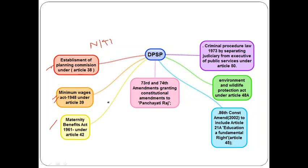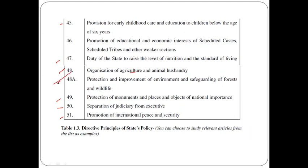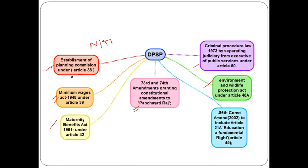Similarly, the Maternity Benefit Act 1961 was passed to bring Article 42 into practice. The Panchayati Raj constitutional amendment was made to ensure that panchayats and local governance are maintained in the country, in line with Article 40. The Environment and Wildlife Protection Act was brought to protect the environment, as mentioned in Article 48A. Then the right to education was brought into Article 21A in the fundamental rights part. Earlier it was mentioned as a directive principle of state policy, and later it was moved into fundamental rights.